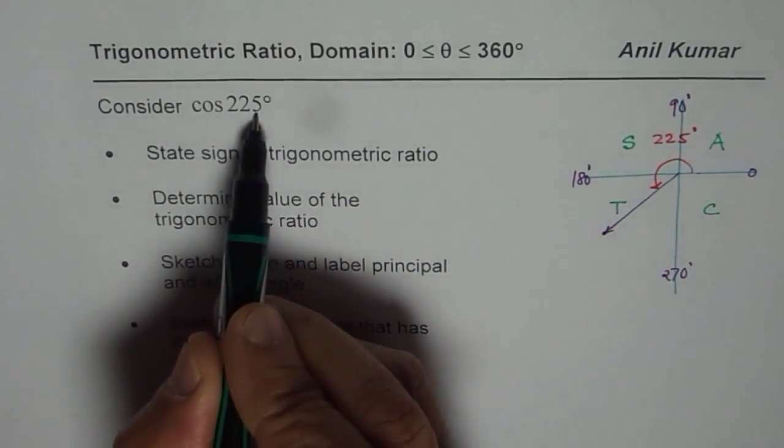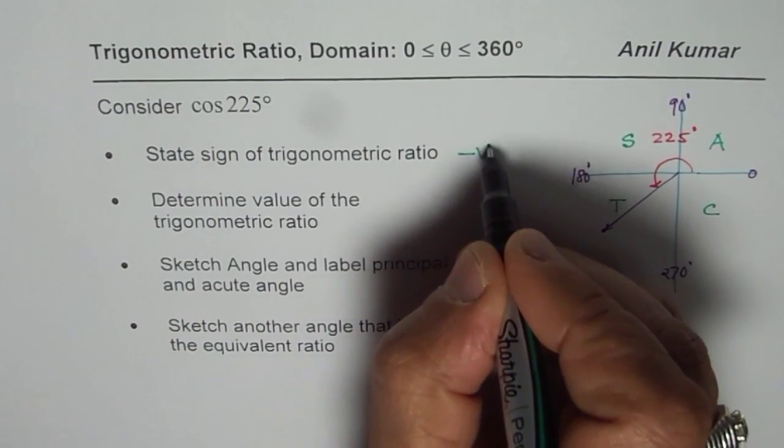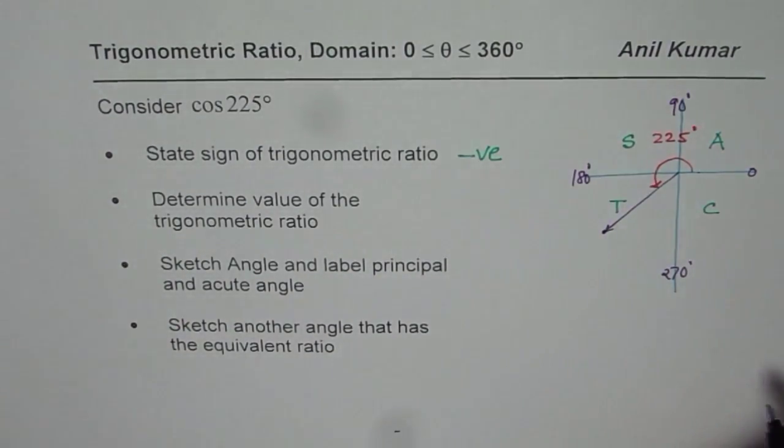and cosine is positive in quadrant 4. Cos of 225, we are in quadrant 3. Therefore, the sign will be negative. So, negative sign.